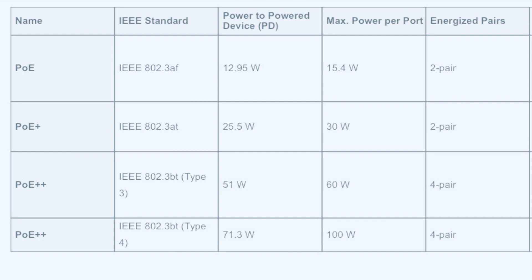Looking at the chart for more detail: starting with PoE — IEEE 802.3af — it delivers up to 12.95 watts to powered devices and a maximum of 15.4 watts from the switch port. It uses only two pairs of the Ethernet cable and is used for VoIP phones and wireless access points. PoE Plus — IEEE 802.3at — delivers a minimum of 25.5 watts and a maximum of 30 watts, also using two pairs of copper Ethernet cable, suitable for PTZ cameras and video IP phones.